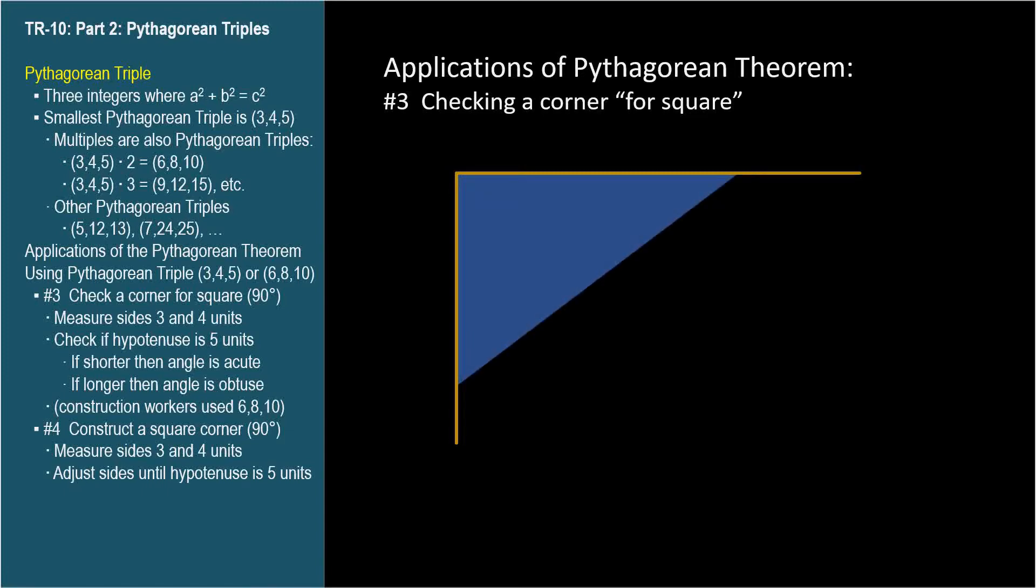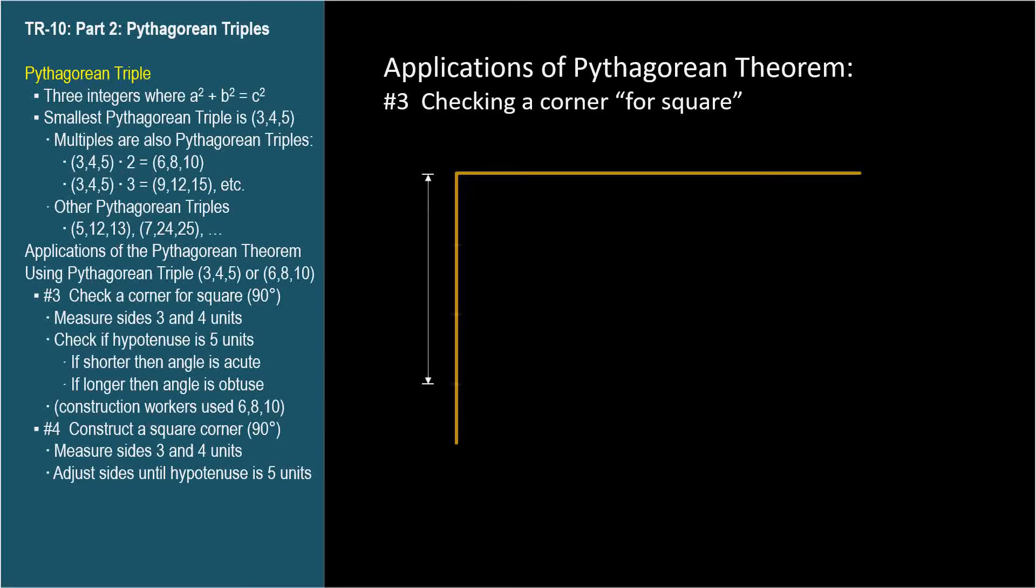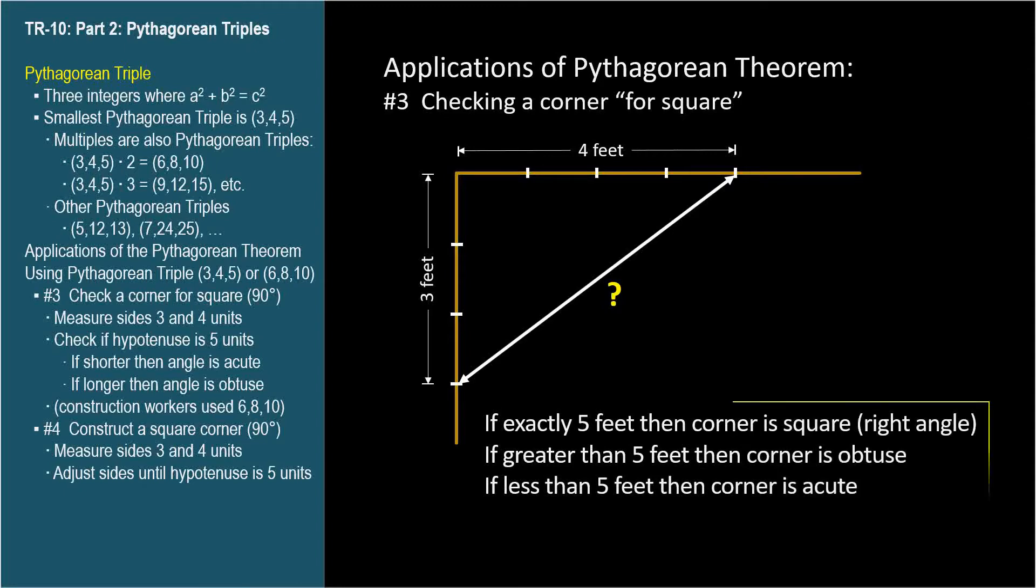Using a three, four, five Pythagorean triple, we measure out three and four feet along the sides. Then measure between these endpoints and compare the length to five feet. If it's exactly five feet, then the corner is square.